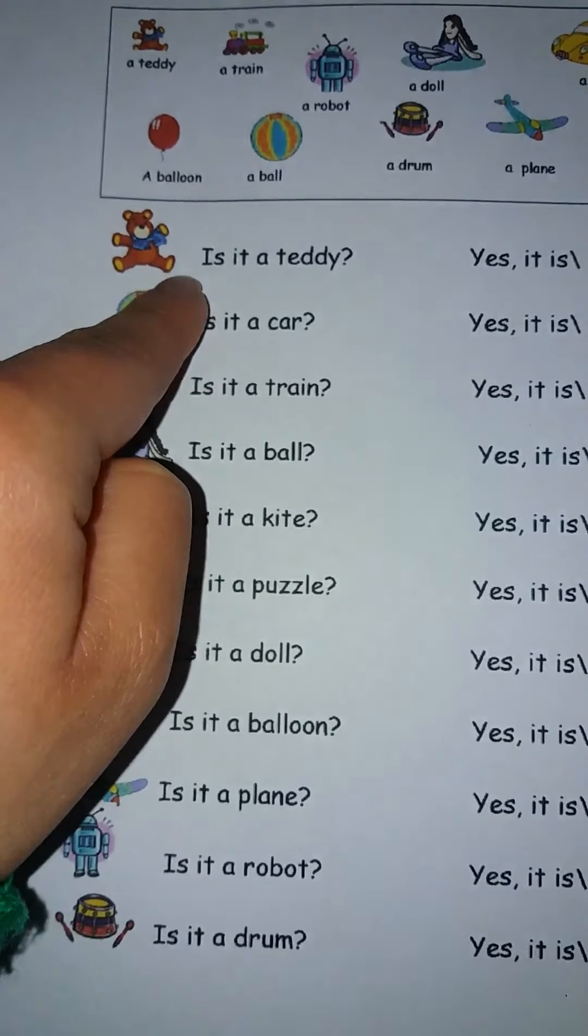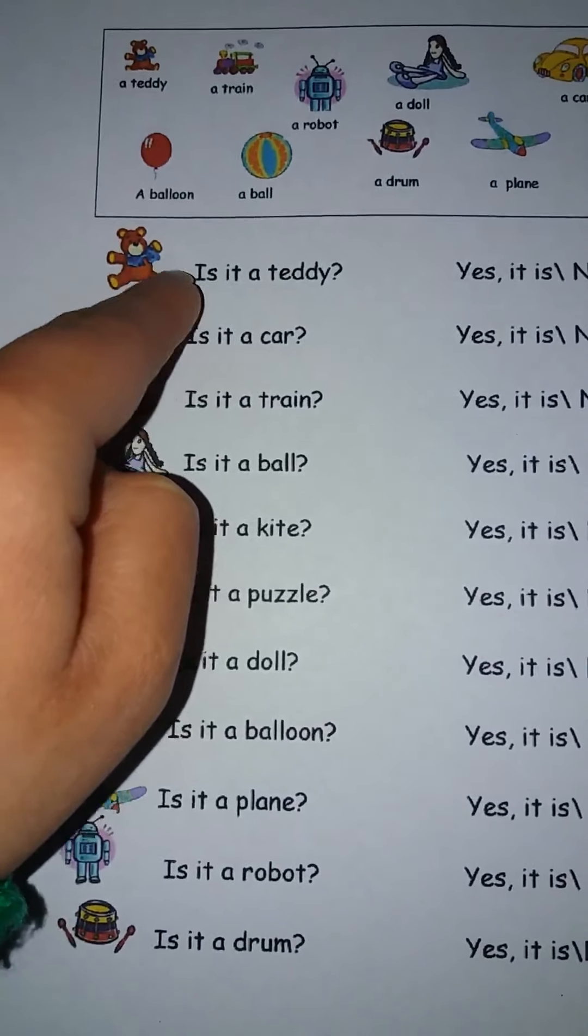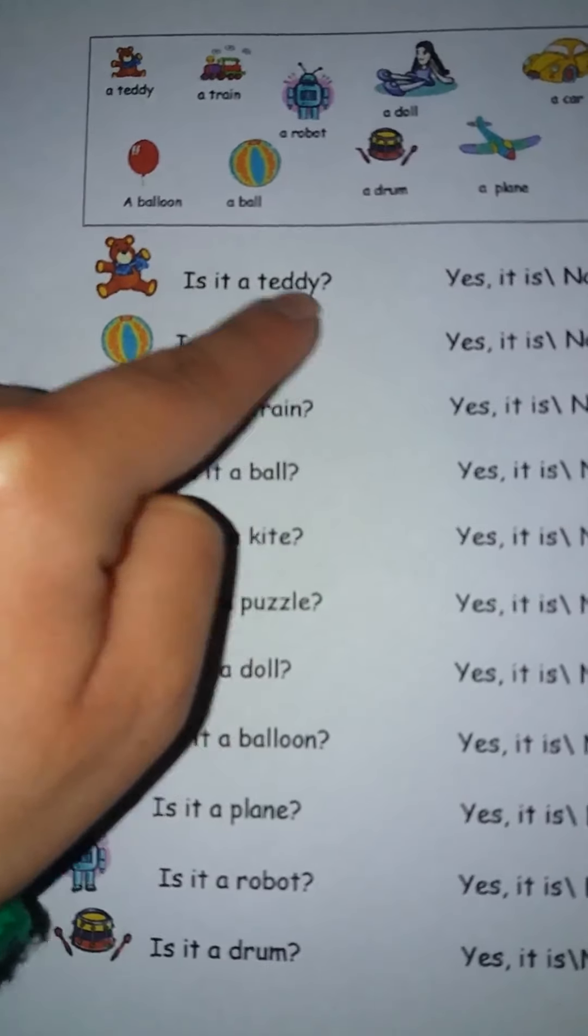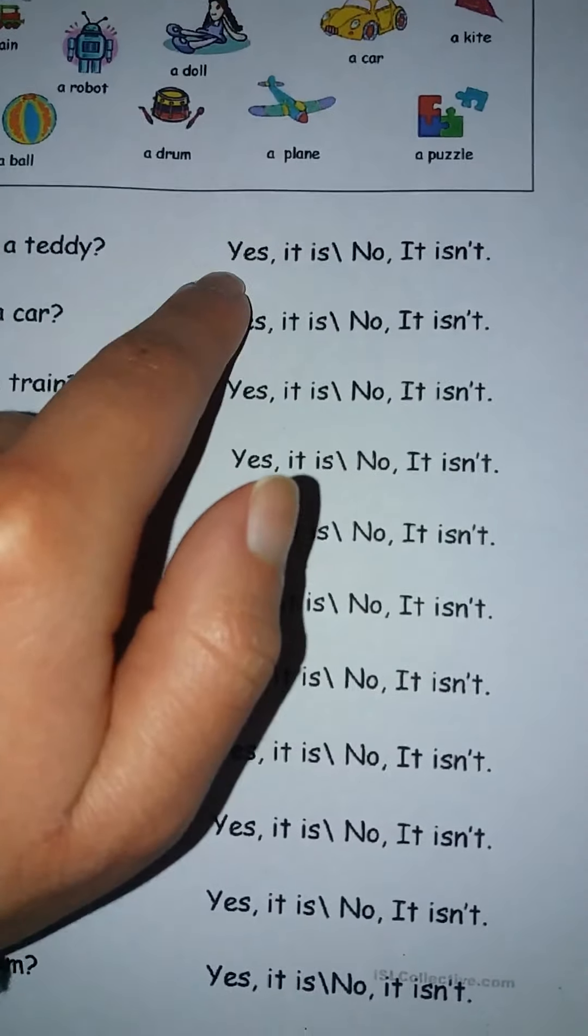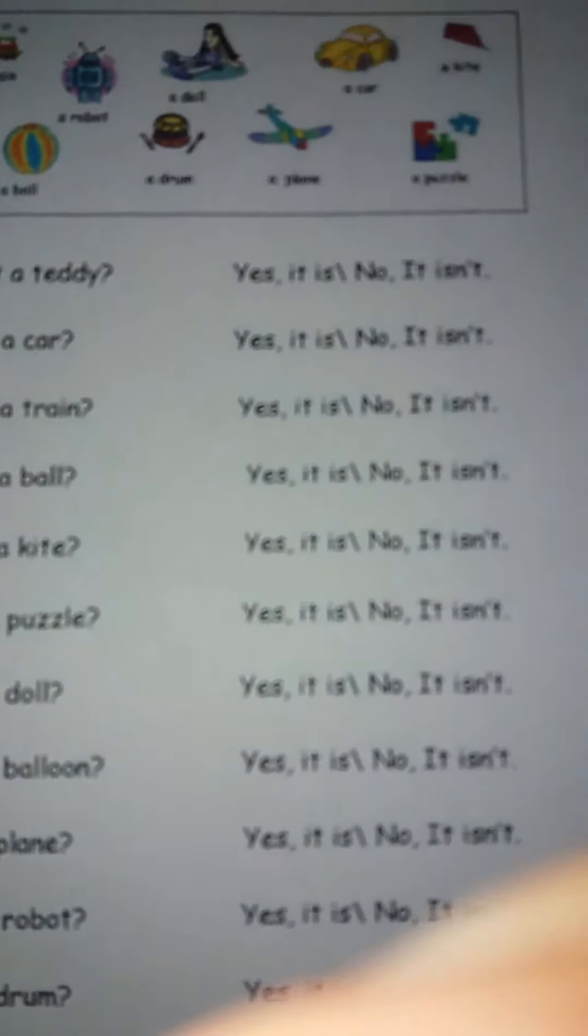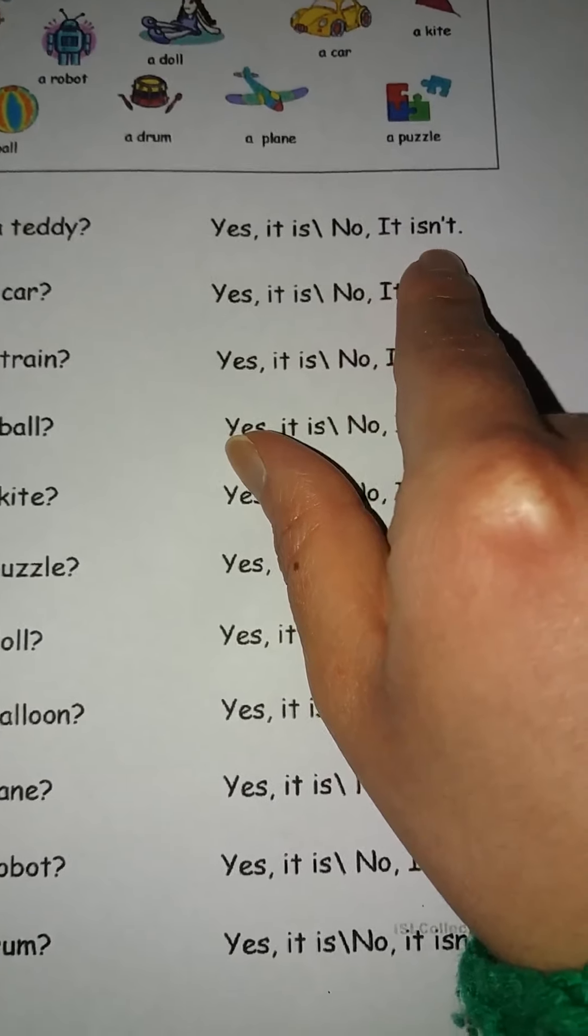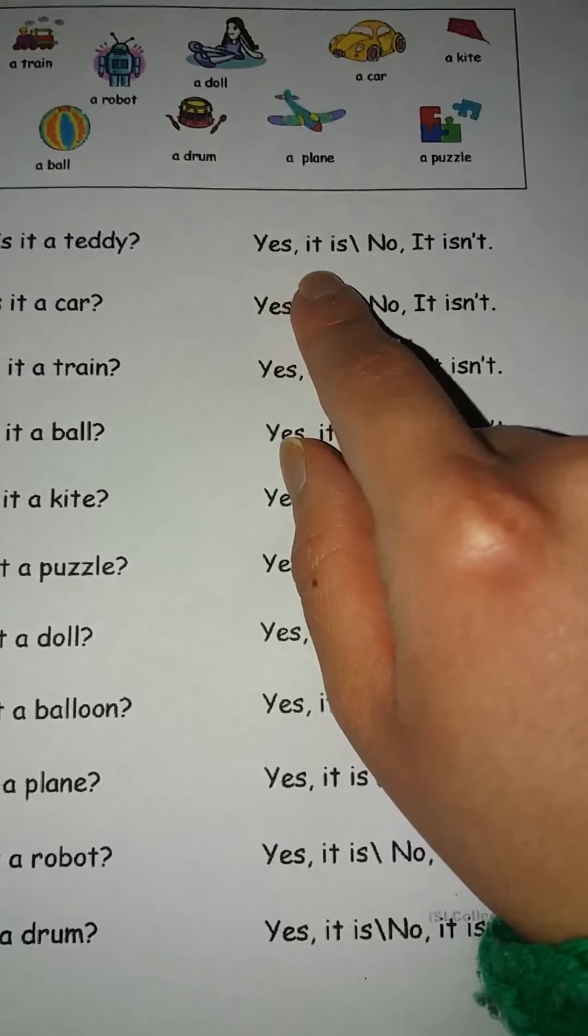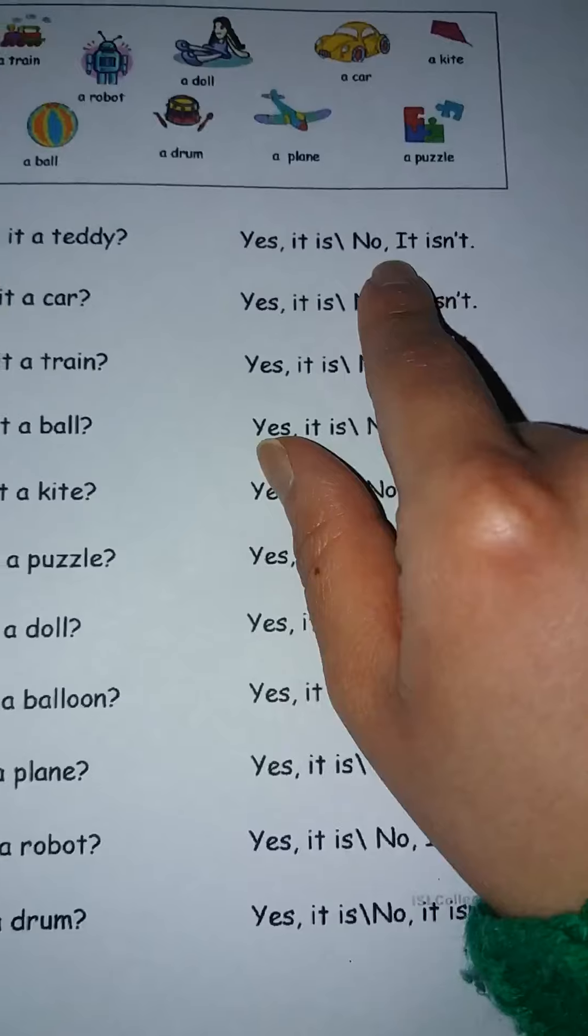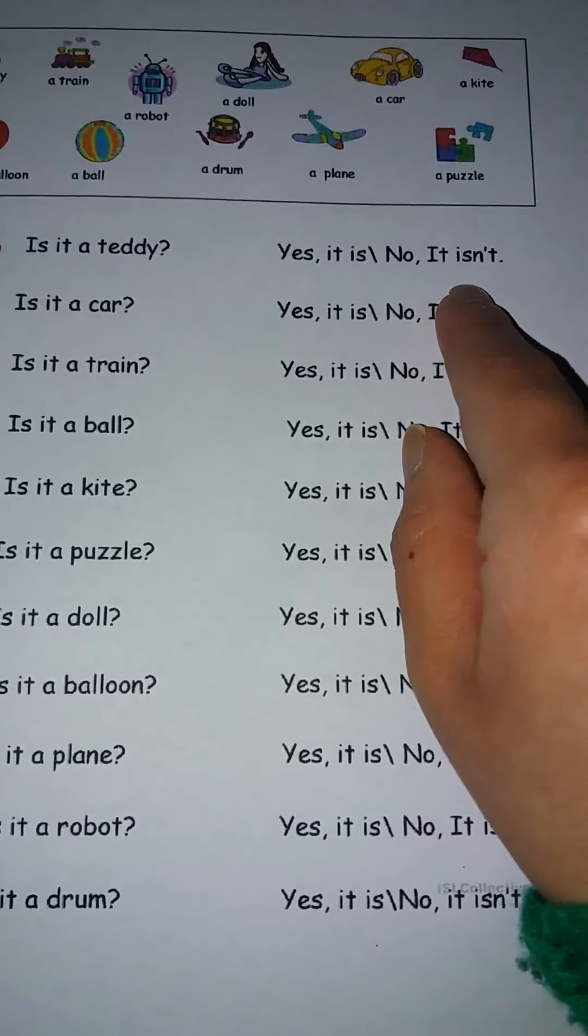Is it a teddy? Is it a teddy? Es un oso de peluche? Entonces ustedes lo que van a hacer es circular la respuesta correcta, ok? Yes, it is, or no, it isn't. Yes, it is significa sí, es un oso de peluche. O no, it isn't significa no, no es un oso de peluche.